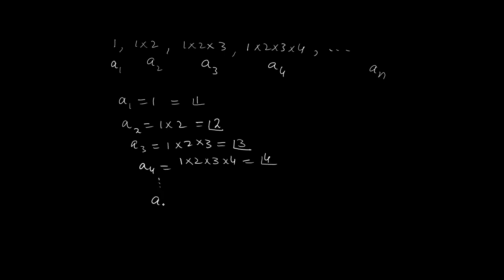Similarly, what will be aₙ? aₙ will be 1 × 2 × 3 × 4 × 5 and so on, multiply n and this will be n factorial.